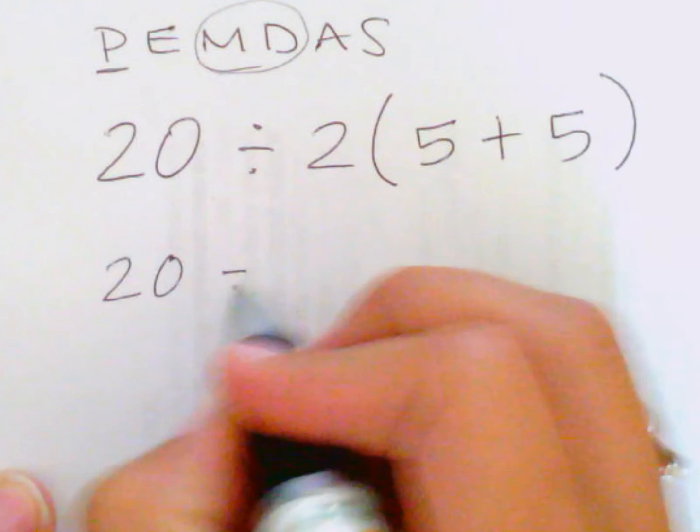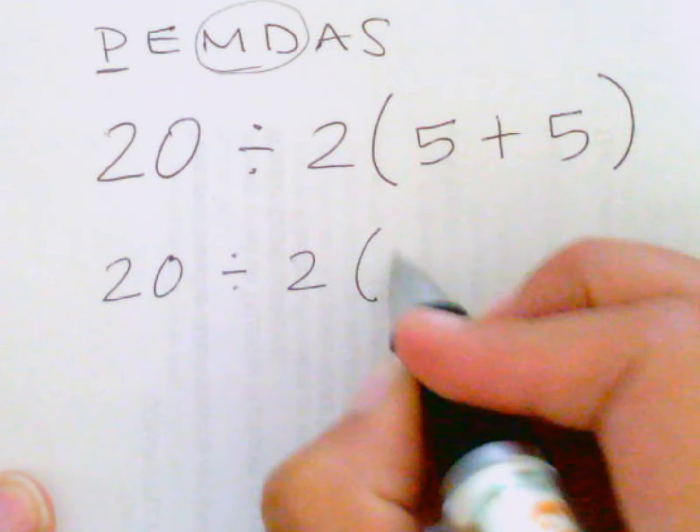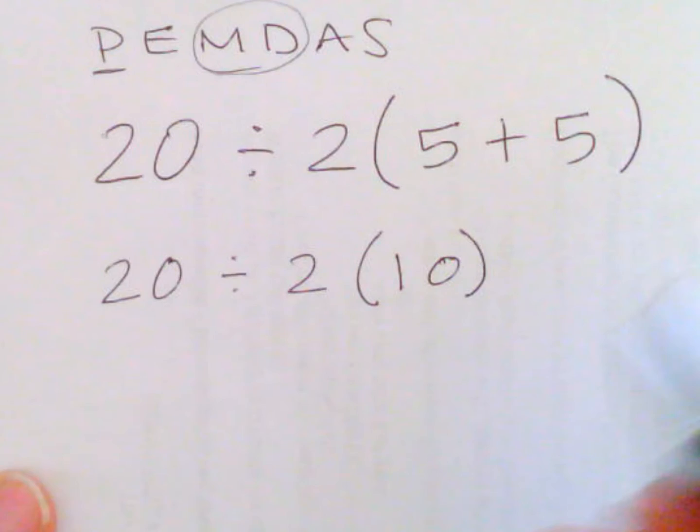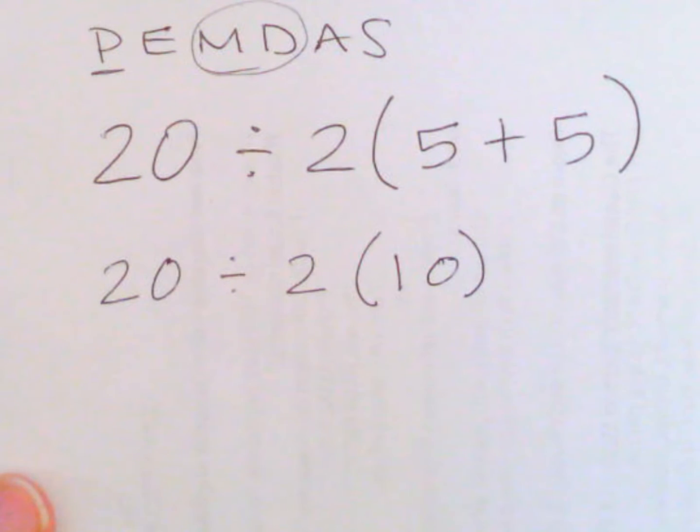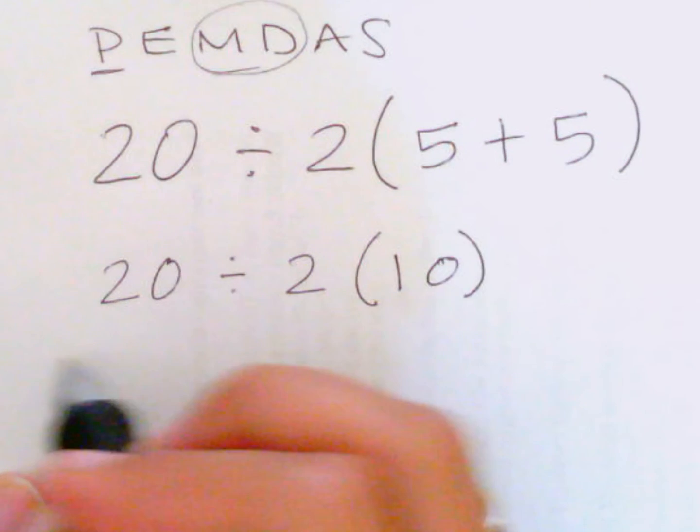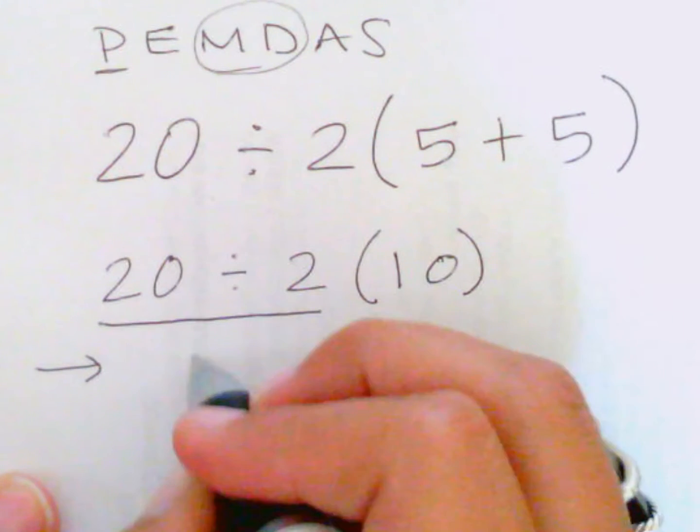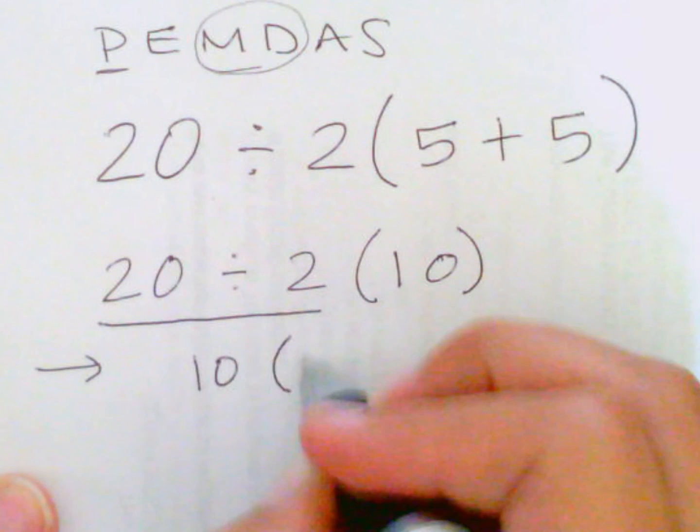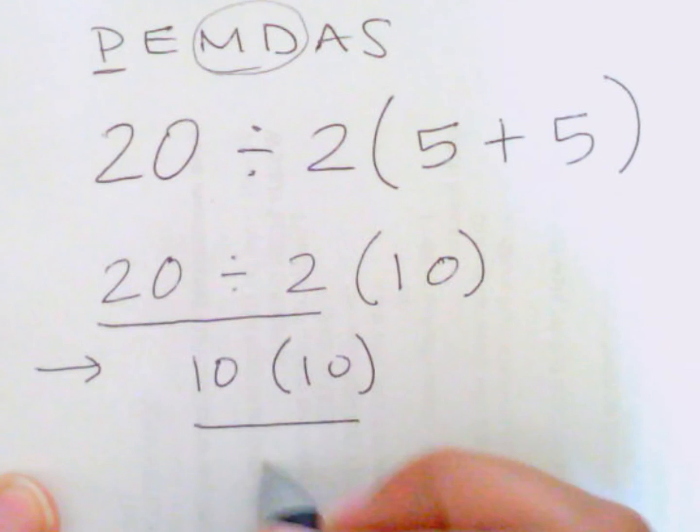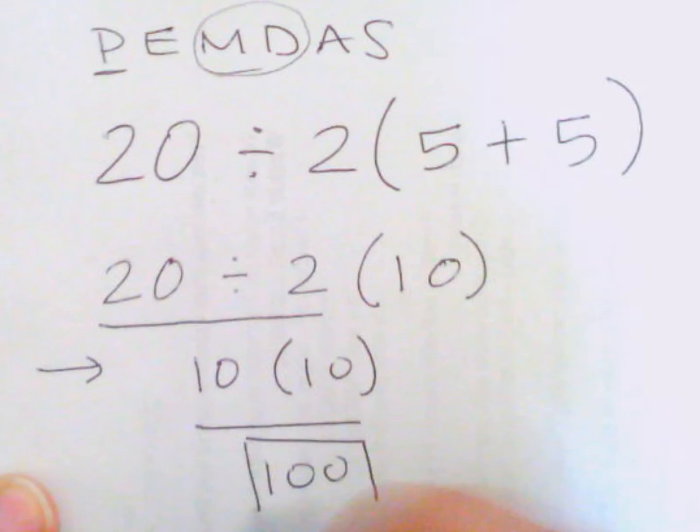So we have 20 divided by 2 times 10. Now, like I said, multiplication and division are done left to right. So we start here. 20 divided by 2 is 10, and 10 times 10 is 100. The answer here is 100.